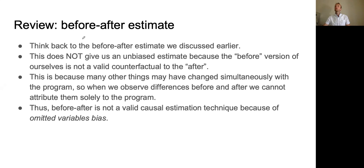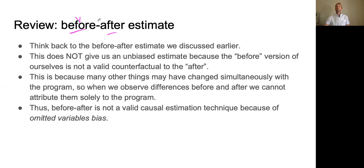Let's review the before-after estimate — this is really terrible. Remember, you look at the outcome variable Y for somebody before they got the treatment, and then the outcome variable Y after they got the treatment. Then you say any growth in Y had to do with the treatment — the government policy. Wrong, that is not right. This does not give us an unbiased estimate because the before version of ourselves is not a valid counterfactual for the after version.